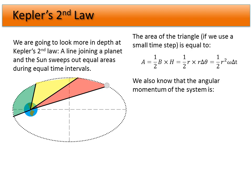We also know that the angular momentum of the system is given by L, where L equals m times r times v-perpendicular — the velocity in the perpendicular direction times m times r. In terms of angular momentum, v-perpendicular is simply the angular velocity omega times the radius. So radius times angular velocity gives us our tangential or perpendicular velocity, and L equals m r squared omega.